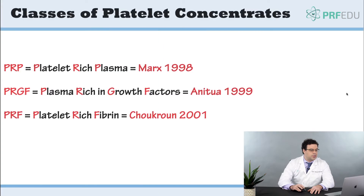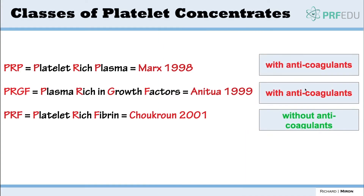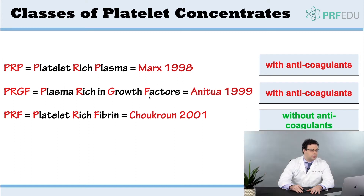A lot of credit also goes to Anitua from Spain, who has done a lot of work and produced fantastic papers over the years with respect to PRGF. Dr. Choukroon is one of the first people to really call it platelet-rich fibrin, and this was going to be a new category of platelet concentrates with anticoagulant removal.